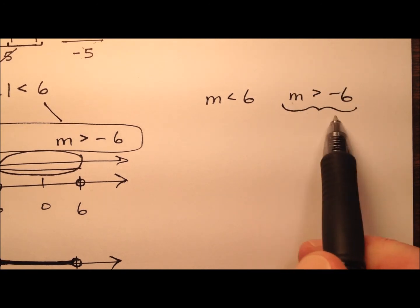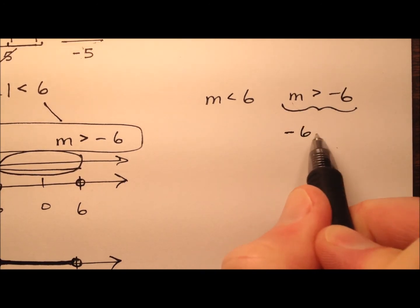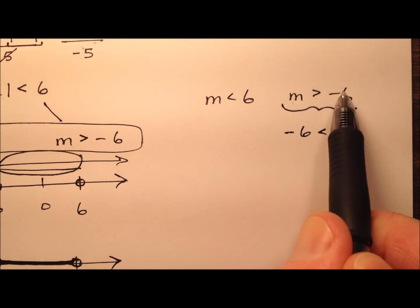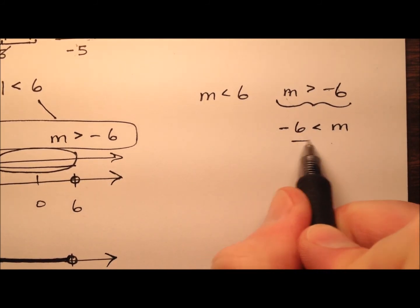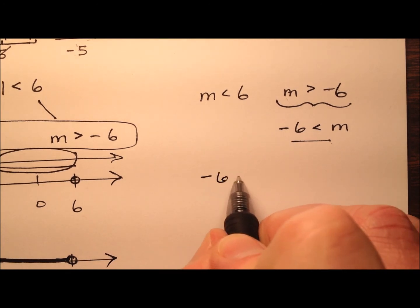I'm going to go ahead and flip them around. So it's going to be negative 6 is less than m, and I can just switch everything around just like that, and that's okay.